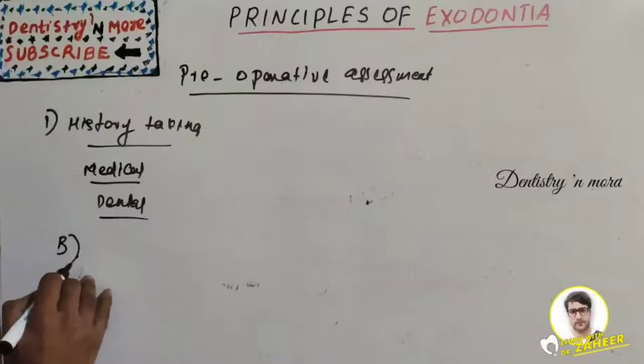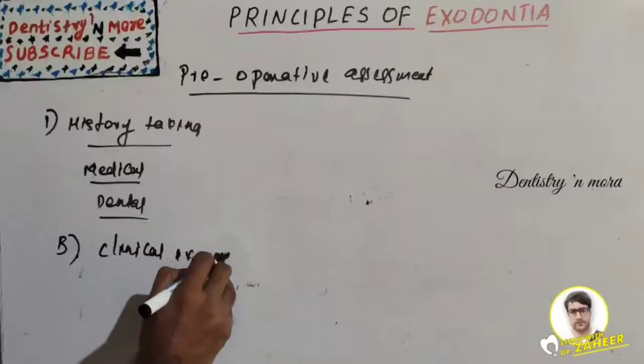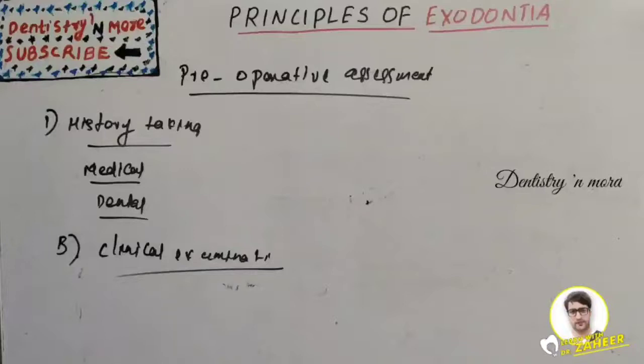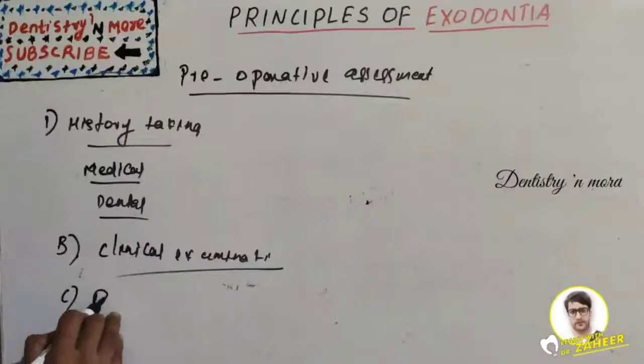After history taking, we start clinical examination. We need to check for proper mouth opening — that is accessibility — then tooth mobility, and the crown condition of the tooth, as the crown might be in a very bad state due to caries, restoration, fracture, or cervical caries. We also check the oral hygiene status and presence of infection at the site.